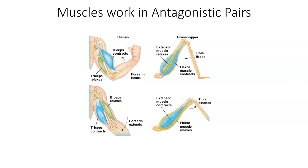Muscles work in antagonistic pairs, meaning they work opposite of each other. If we want to bring the forearm up, we contract the bicep. If we want to extend the forearm straight, we contract the tricep. The bicep and tricep are antagonistic pairs - when one contracts, the other relaxes. The legs work the same way: when you want to bend your leg, the hamstring contracts and the quad relaxes; when you want to straighten the leg, the quad contracts and the hamstring relaxes. Those are antagonistic pairs as well.